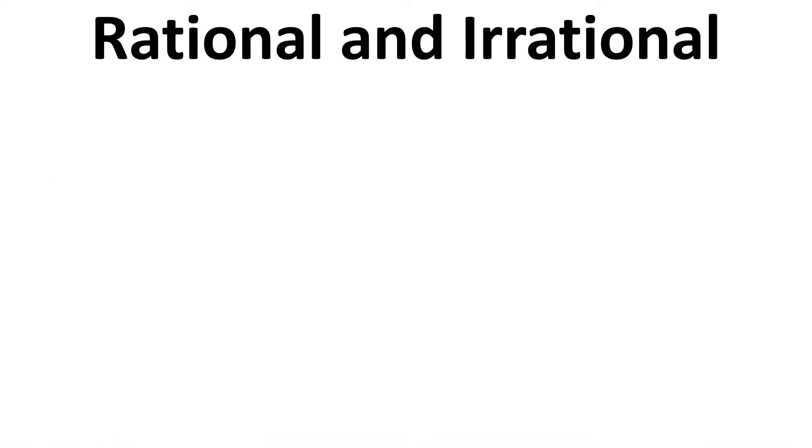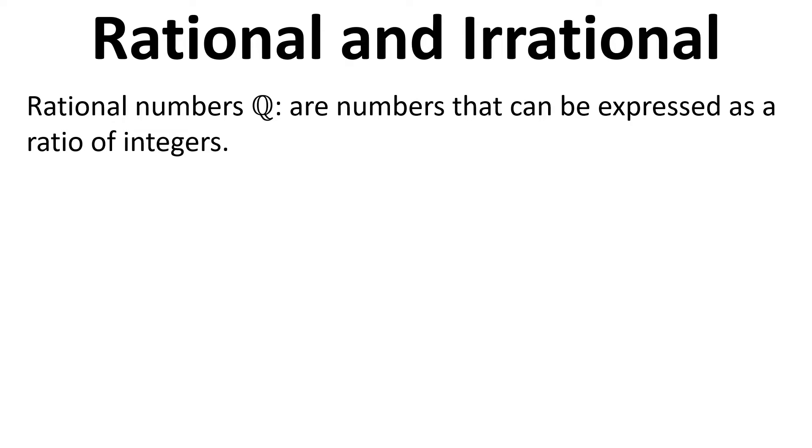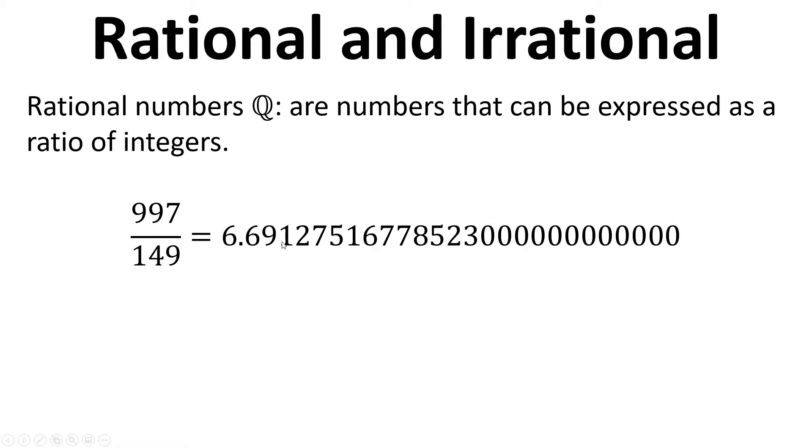We also have the rational numbers and the irrational numbers. Rational numbers, represented by this symbol here - this Q with these double lines - are numbers that can be expressed as a ratio of integers. There's an example here: 997 divided by 149. These are both integers. Then we get this ratio. If we calculate this out, we'll see it does have a limited number of decimal places before it just goes to 0. So that is a rational number.